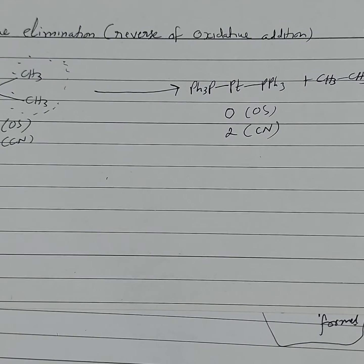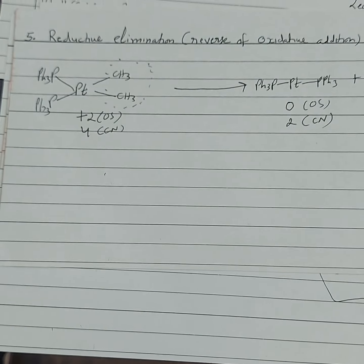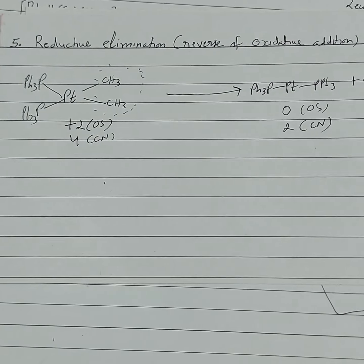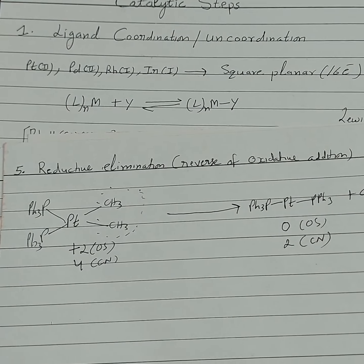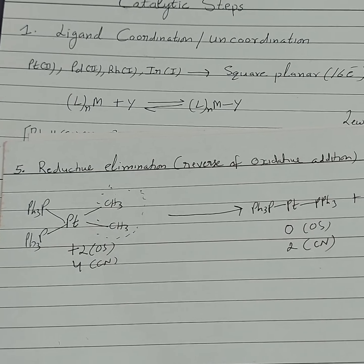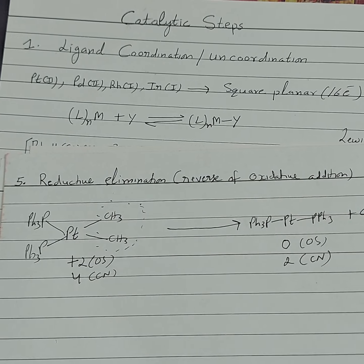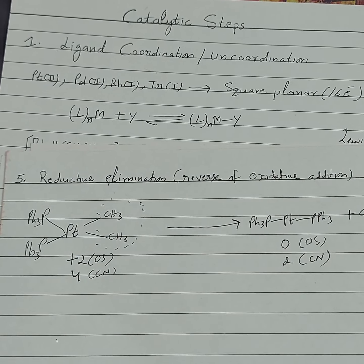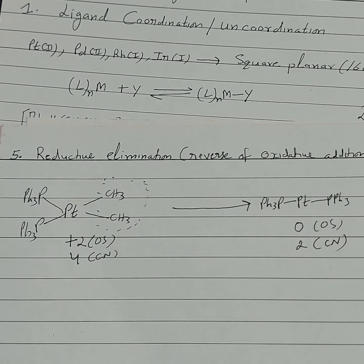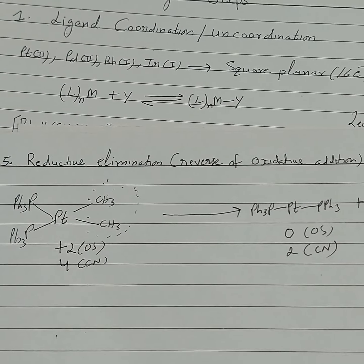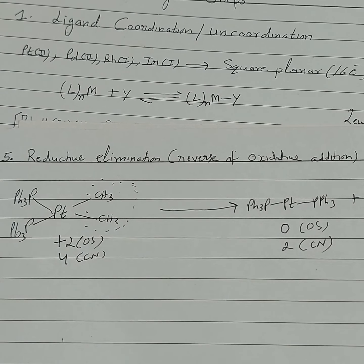The five most important steps in catalytic chemistry are, in quick revision: number 1, ligand coordination and uncoordination; number 2, migratory insertion; number 3, nucleophilic attack on coordinating ligand; number 4, oxidative addition reaction; and number 5, reductive elimination. When we explain a catalytic cycle, these five steps are most commonly used to explain the catalysis.